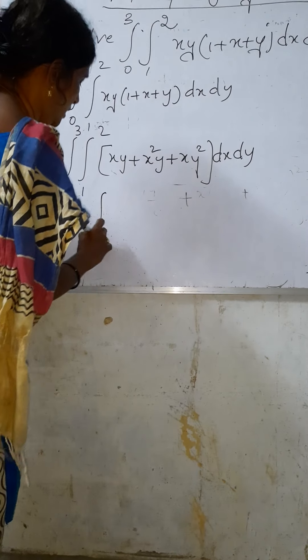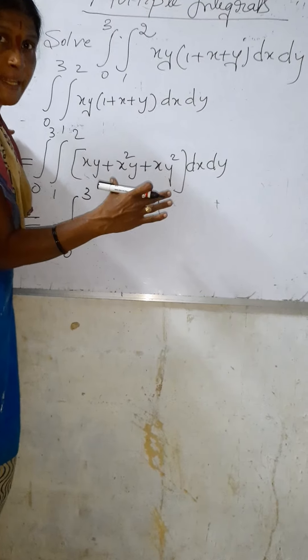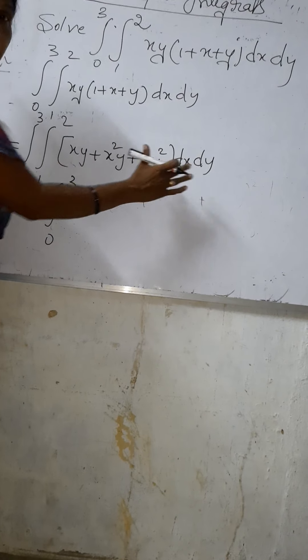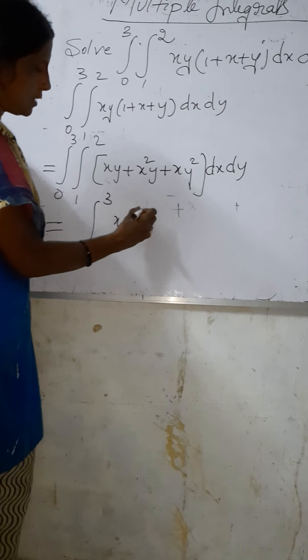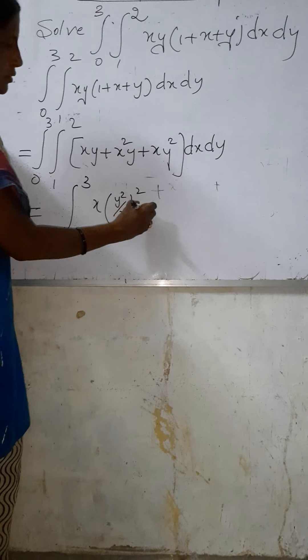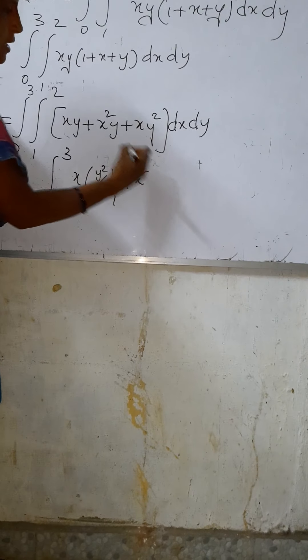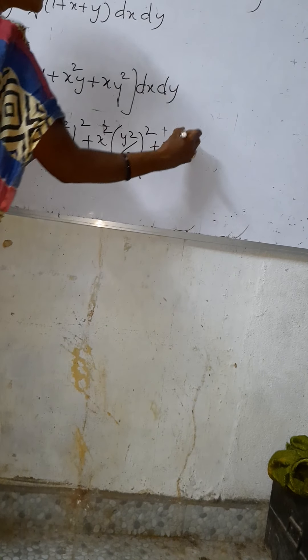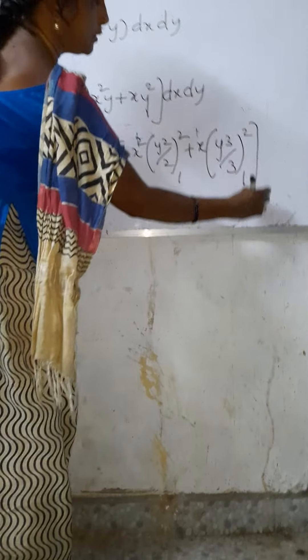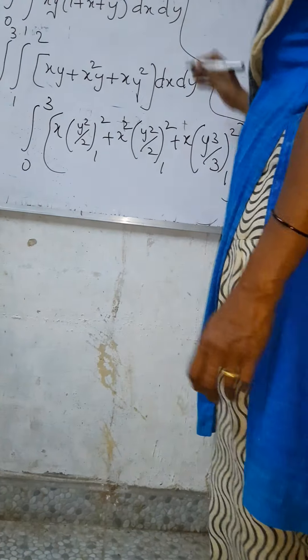First of all, integration with respect to y. In this expression, integrating the y terms: x times y²/2 with limits 1 to 2, plus x² times y²/2 with limits 1 to 2, plus x times y³/3 with limits 1 to 2, into dx.